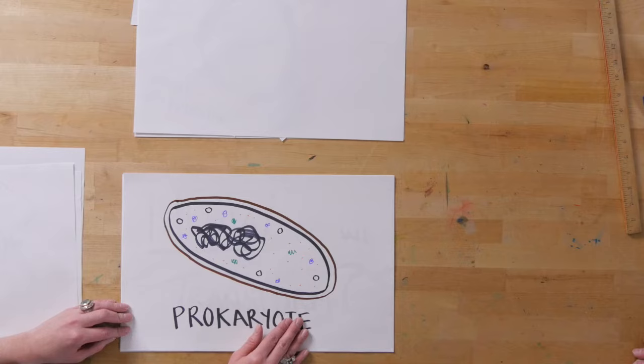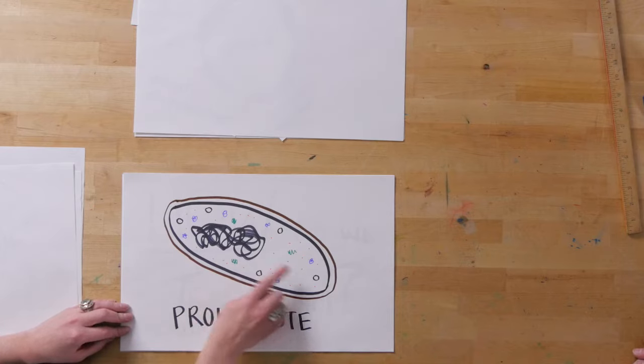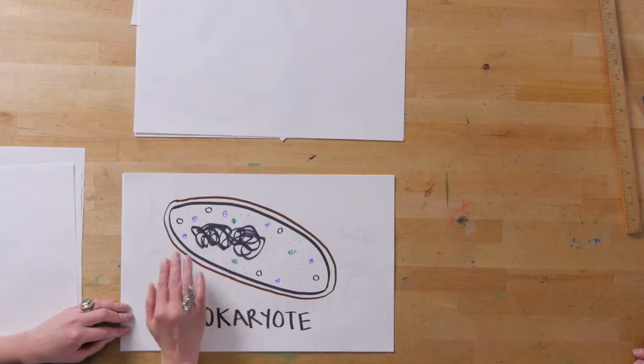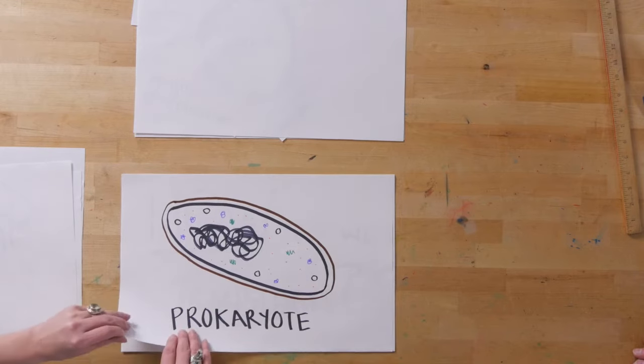Prokaryotic cells like bacteria are smaller, they have a cell wall, they have a cell membrane, and they have DNA that is not inside of a nucleus. That makes them a little bit easier to transform.